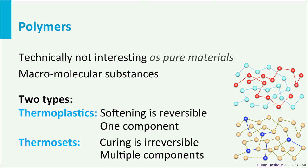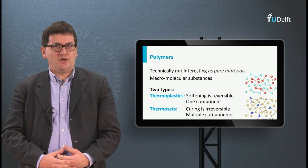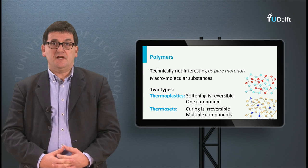The second polymer type, shown in the picture below, is the thermoset. Thermosets are made of more than one type of monomer. Usually the different monomers react and form large molecular networks. In this case there are strong bonds between the chains and they don't weaken when the temperature increases. The cross-linking or curing of these polymers is irreversible.